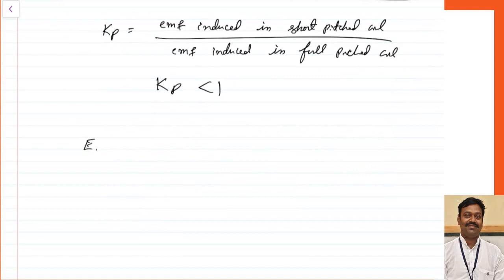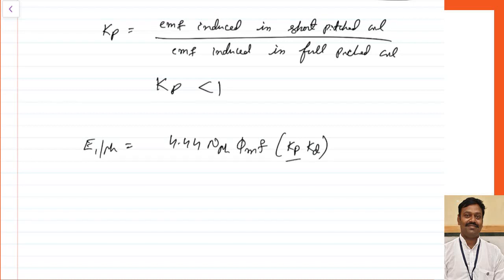If you want to calculate the net EMF because of the distributed winding, whatever is the EMF in concentrated winding — 4.44·N_phase·Φ_max·f — you have to multiply with both the pitch factor Kp and the distribution factor Kd. If it is a full pitched coil, Kp equals 1; if it is short pitched, Kp equals cos(α/2). The product of Kp and Kd is called the winding factor Kw, because both factors arise from the type of winding employed.